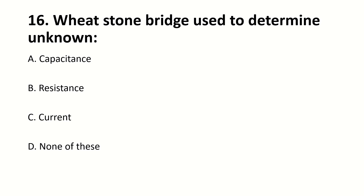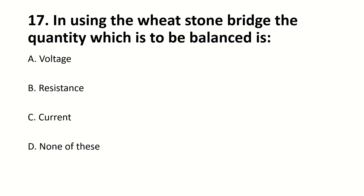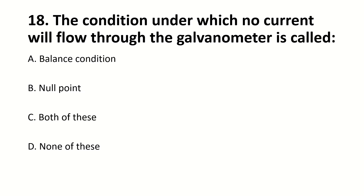The Wheatstone bridge is used to determine unknown — blank. Right answer is B: resistance. In using the Wheatstone bridge, the quantity which is to be balanced is — blank. Right answer is C: current. The condition under which no current will flow through the galvanometer is called — blank. Right answer is C: both of these.